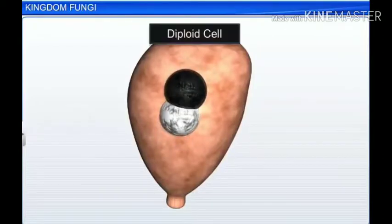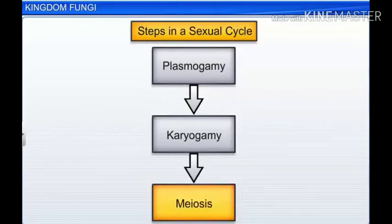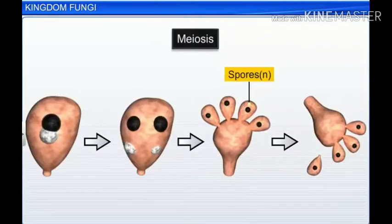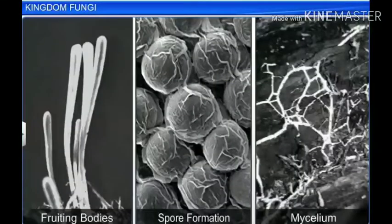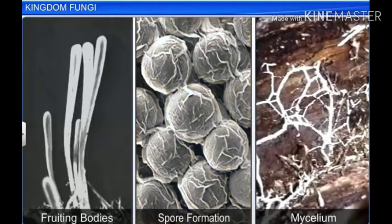Later, the parental nuclei fuse to make a diploid cell. The third stage involves reduction division, that is, meiosis, to form haploid spores. Meiosis occurs in the fruiting bodies of fungi. Together, the fruiting bodies, the mode of spore formation, and the morphology of the mycelium form the basis of the division of the kingdom fungi into various classes.